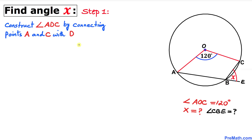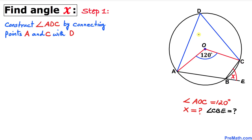Our very first step is to construct angle ADC by connecting points A and C with some point D. Point D is placed on the circle, and we connect it to both A and C. Here is our much nicer looking diagram.